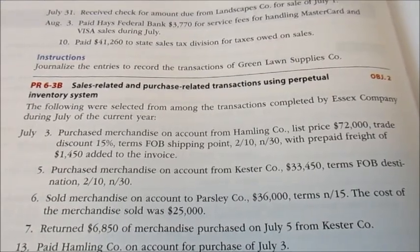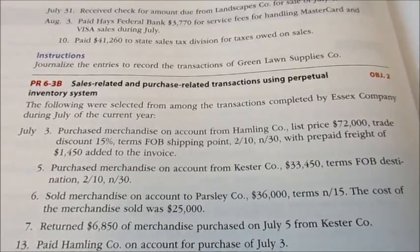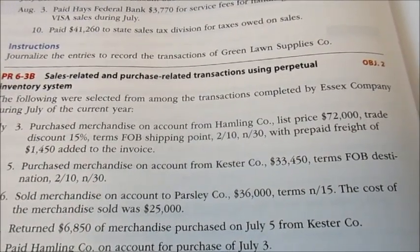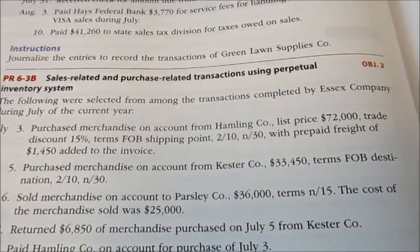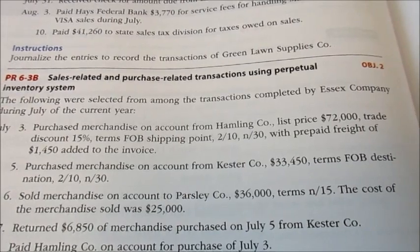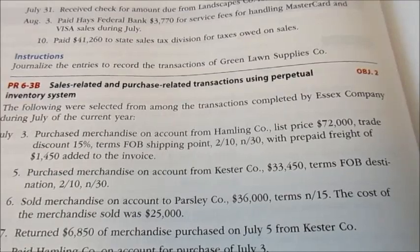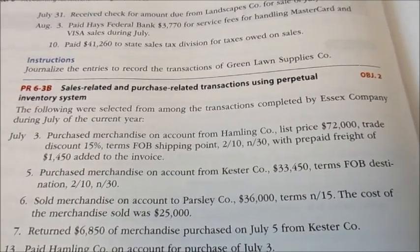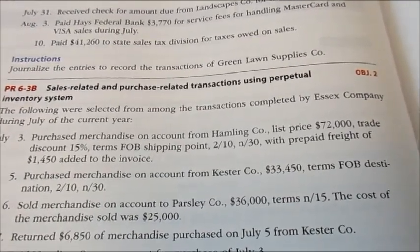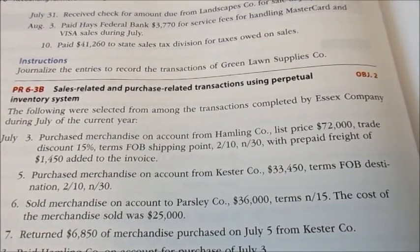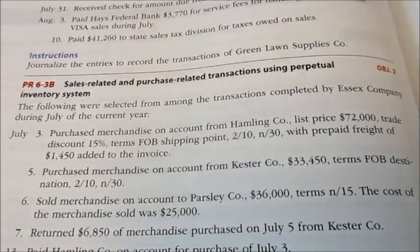July 3rd: Purchase merchandise on account from Hamling Company. List price $72,000, trade discount 15%, terms FOB Shipping Point, 2/10 net 30 — meaning if you pay within 10 days you get a 2% discount; otherwise, the entire bill is due within 30 days. Prepaid freight of $1,450 was added to the invoice. That is a lot of information crammed into one spot, so we're going to break it down.